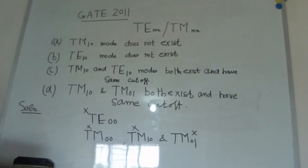We have to see the given options and out of the given options we have to find the true option. We start from option A. This means that the TM_10 mode of the waveguide does not exist.